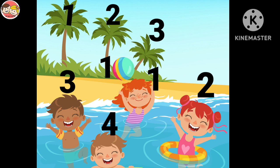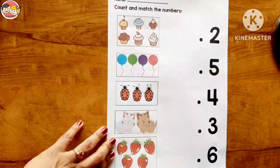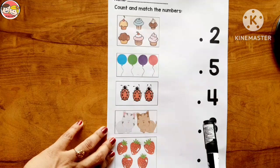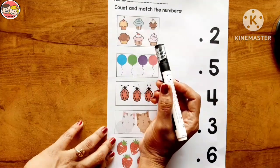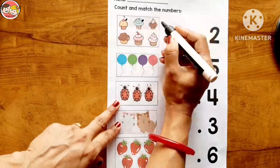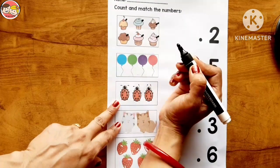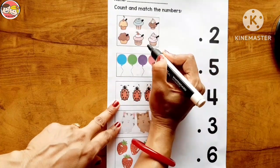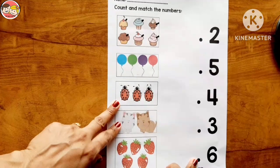Children, it's a very important and interesting activity which will enhance your sense of numbers as well as your logical thinking. Now next example: count and match the numbers. We have to count the objects and then match with the appropriate number. Look at the first box — these are all cupcakes. Let's count: one, two, three, four, five, six. There are six cupcakes. Where is number six? Yes, this is number six — let's match.